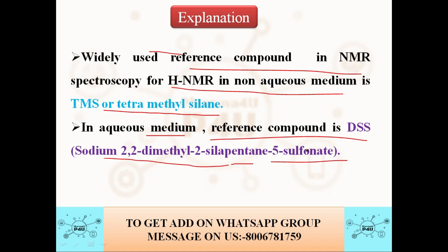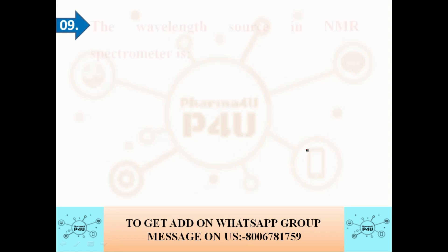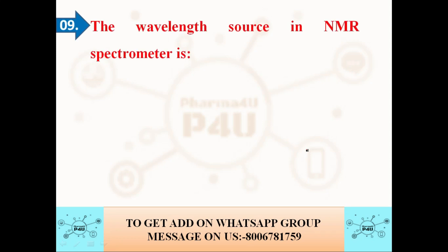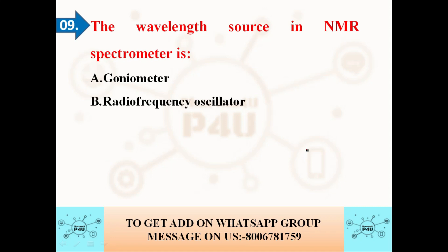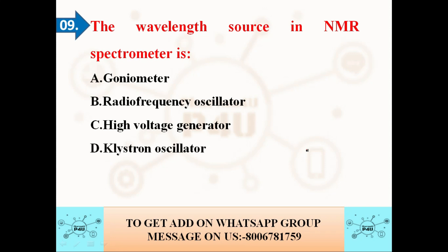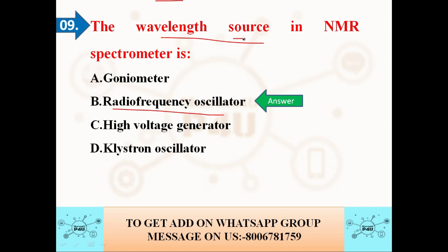The second last question is: the wavelength source in an NMR spectrometer is — option A: goniometer; option B: radio frequency oscillator; option C: high voltage generator; option D: klystron oscillator. The correct answer is radio frequency oscillator. Students, note down the radiation sources for NMR, UV, and IR, as questions from the instrumentation section often arise from these topics.